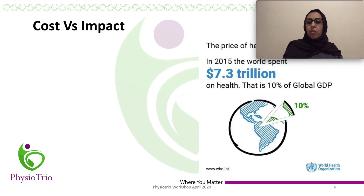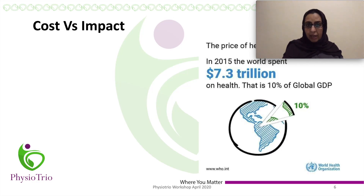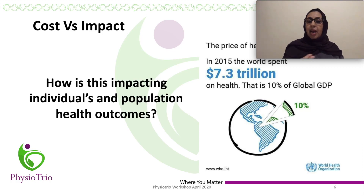Another question every healthcare system is examining is cost — the cost versus the impact. The cost of healthcare is getting higher and higher, reaching up to 10% of GDP globally. So are we spending our money in the right direction? Outcome measurement is one of the tools to make sure we are getting value from our spending and understanding how this impacts individuals and populations.